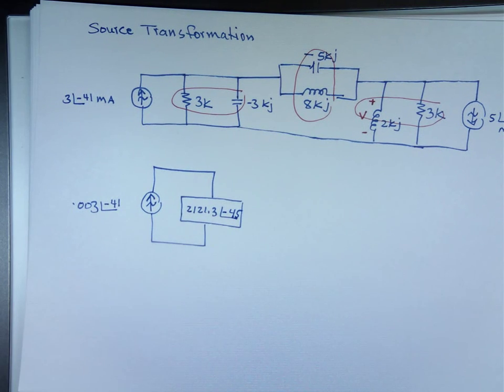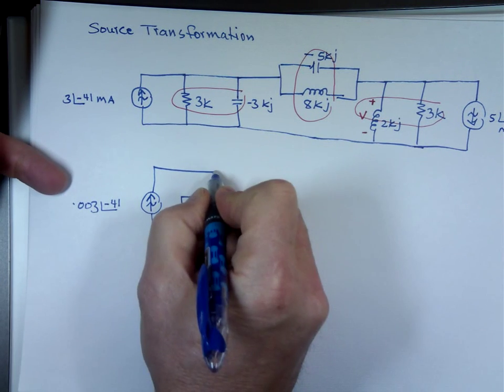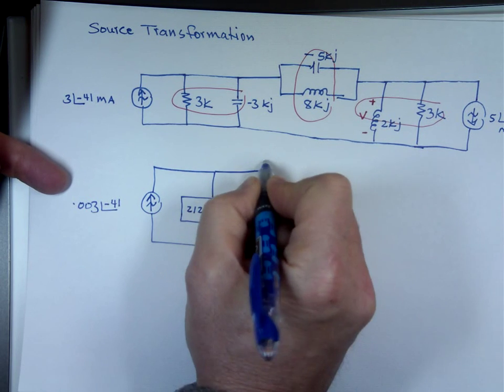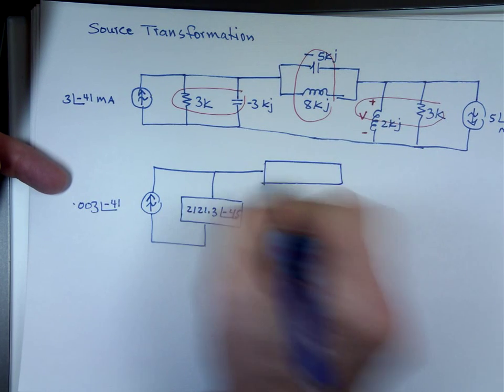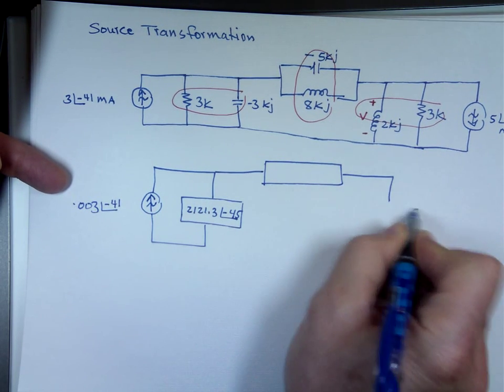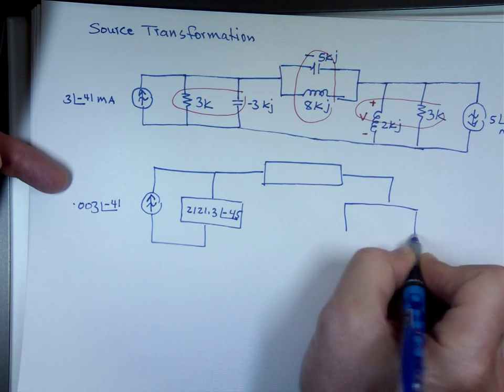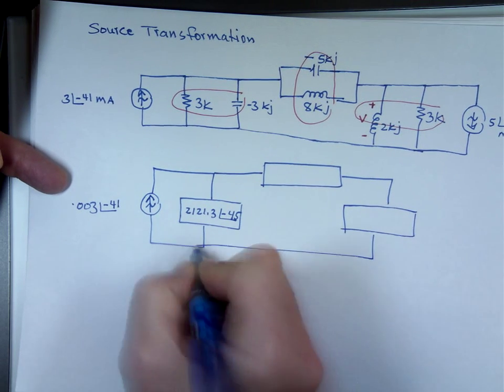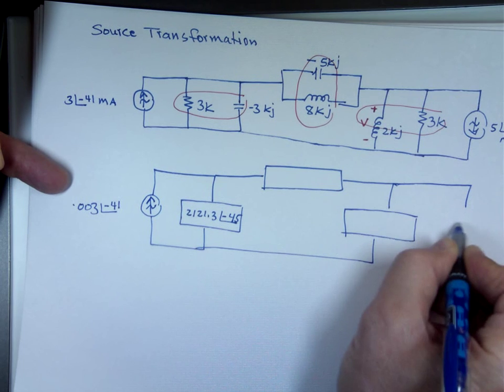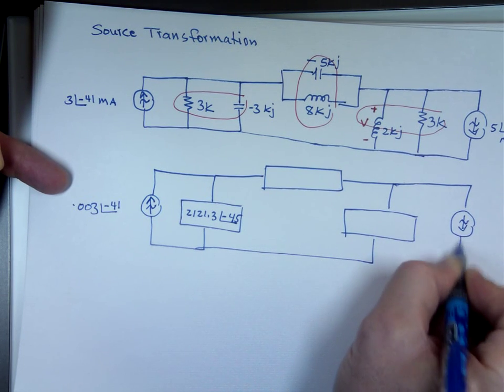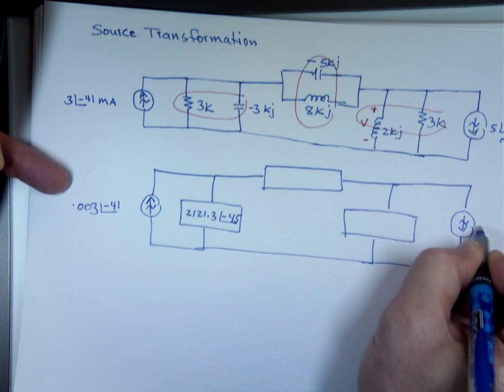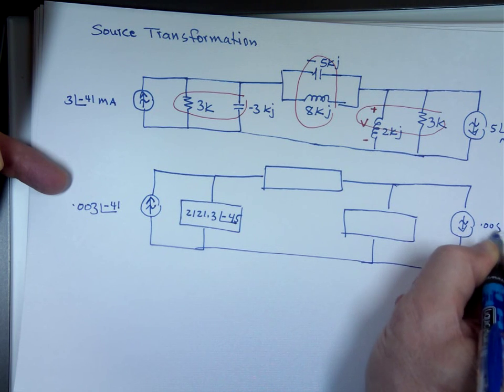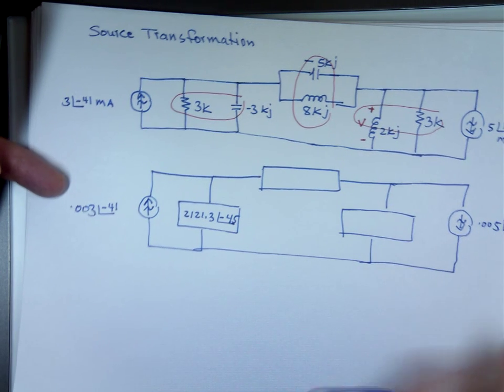Another box here, another box here, and the other source 0.005 angle 13, the millis are gone.